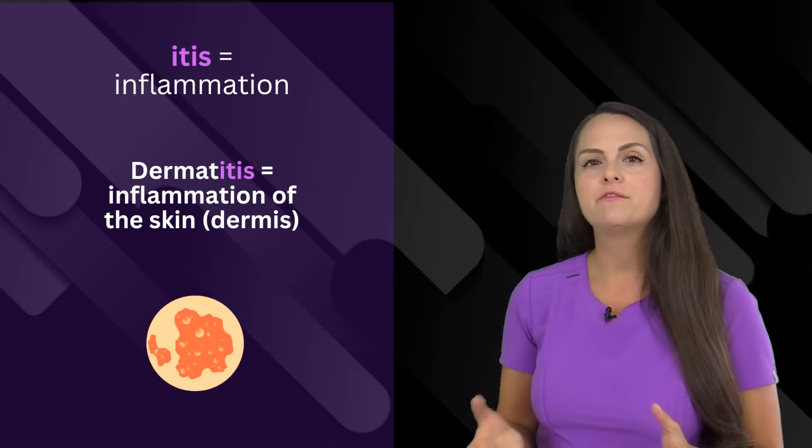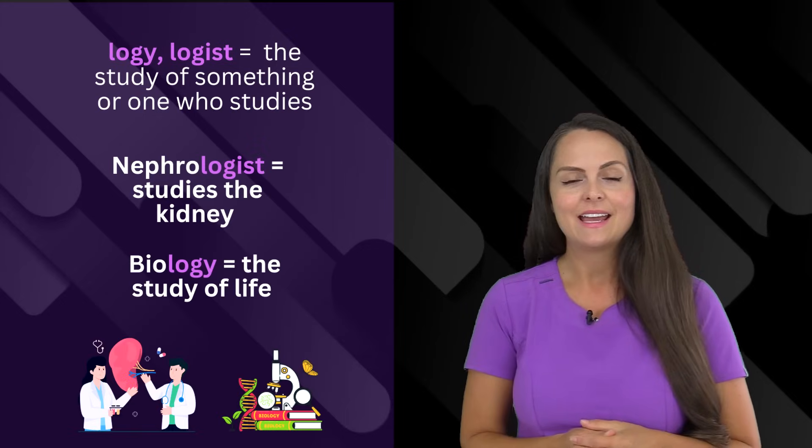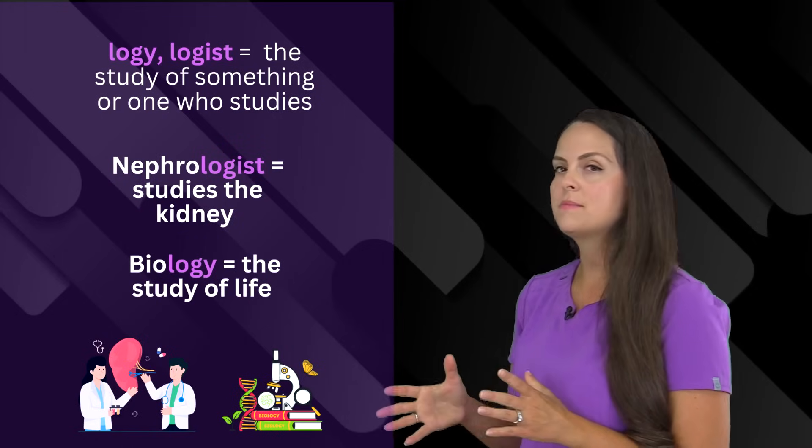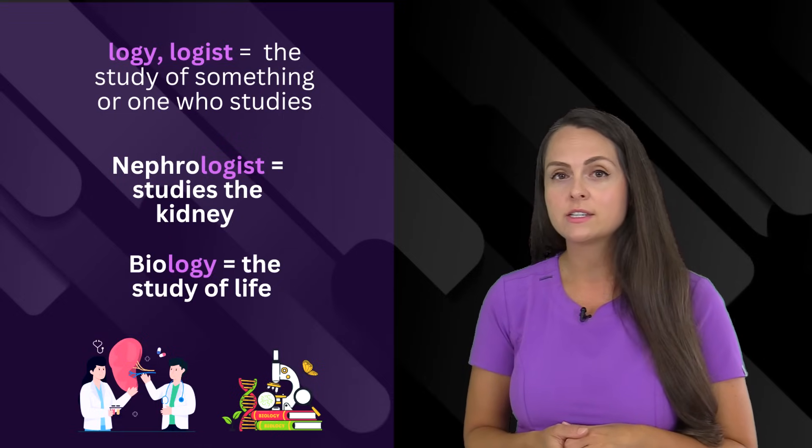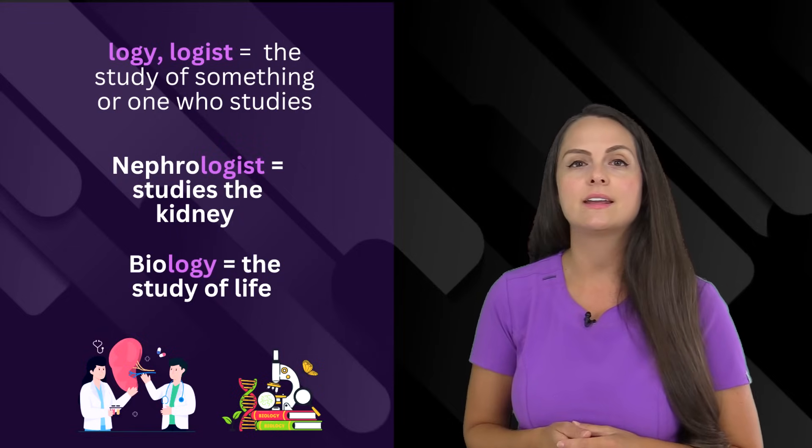Then there's itis, which means inflammation. If a person has inflammation of their skin, we would say that they have dermatitis. And then there's logy or logist. These suffixes mean the study of something or someone who studies. So a nephrologist is someone who studies the kidneys or the term hematology is the study of blood.